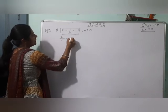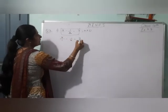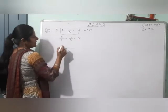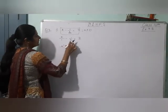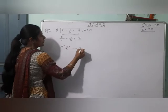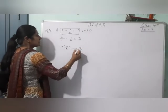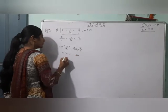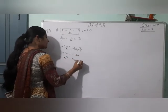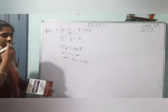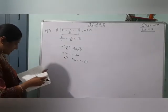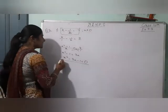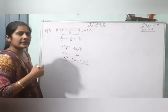First of all, I am taking the LCM of this equation. Taking LCM on the LHS, this becomes x square minus 1 equal to 3 by 1. Cross multiplying, I am getting x square minus 1 is equal to 3x. Therefore x square minus 3x minus 1 equals 0. We have to solve this equation by quadratic formula.